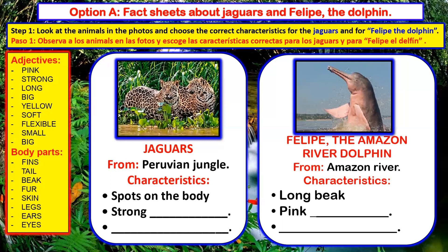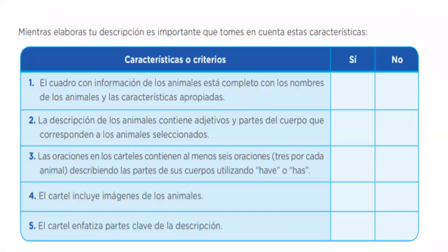Let's continue. Está clarísimo el do it yourself - está fácil también. Mientras elaboras tu descripción, es importante que tomes en cuenta estas características: ¿el cuadro con información de los animales está completo con los nombres y las características apropiadas? ¿La descripción contiene adjetivos y partes del cuerpo que corresponden a los animales seleccionados? ¿Las oraciones en los carteles contienen al menos seis oraciones, tres por cada animal, describiendo las partes del cuerpo usando have y has? ¿El cartel incluye imágenes de los animales? ¿El cartel enfatiza partes claves de la descripción? Léelo por favor.